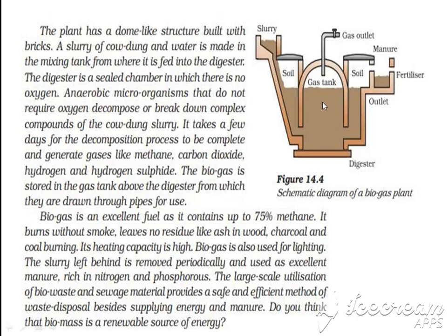The digester is a sealed chamber in which there is no oxygen. Without oxygen, anaerobic microorganisms that do not require oxygen decompose or break down complex compounds of cow dung slurry. It takes a few days for the decomposing process to be complete and generate gases like methane, carbon dioxide, hydrogen and hydrogen sulfide. The biogas is stored in the gas tank above the digester.